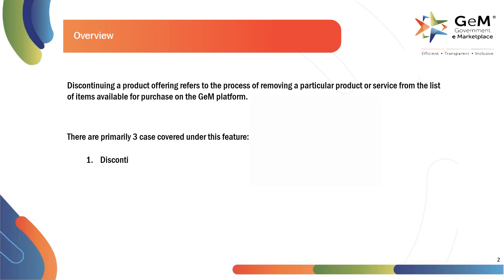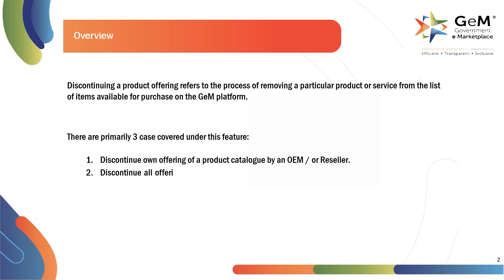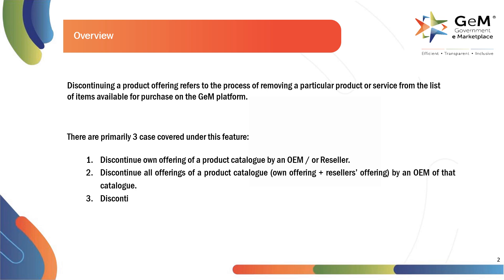Case one: Discontinue own offering of a product catalog by an OEM or reseller. Case two: Discontinue all offerings of a product catalog — own offering plus reseller's offering — by an OEM of that catalog. Case three: Discontinue an existing or new catalog that is pending for review by the OEM of that catalog.